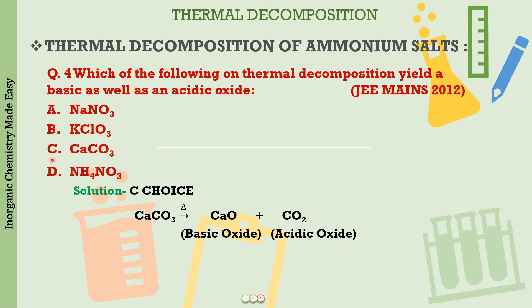We should also know about the incorrect choices: what NaNO3 gives, what potassium chloride gives, and what ammonium nitrate gives — all of which we will cover in our thermal decomposition lectures. Today we learned about ammonium salts. Ammonium nitrate on heating gives N2O and water (nitrate is the exception among oxidizing anions). Remaining topics include chlorate and nitrate ions, which we will discuss in the next lecture — also a very important and helpful lecture.